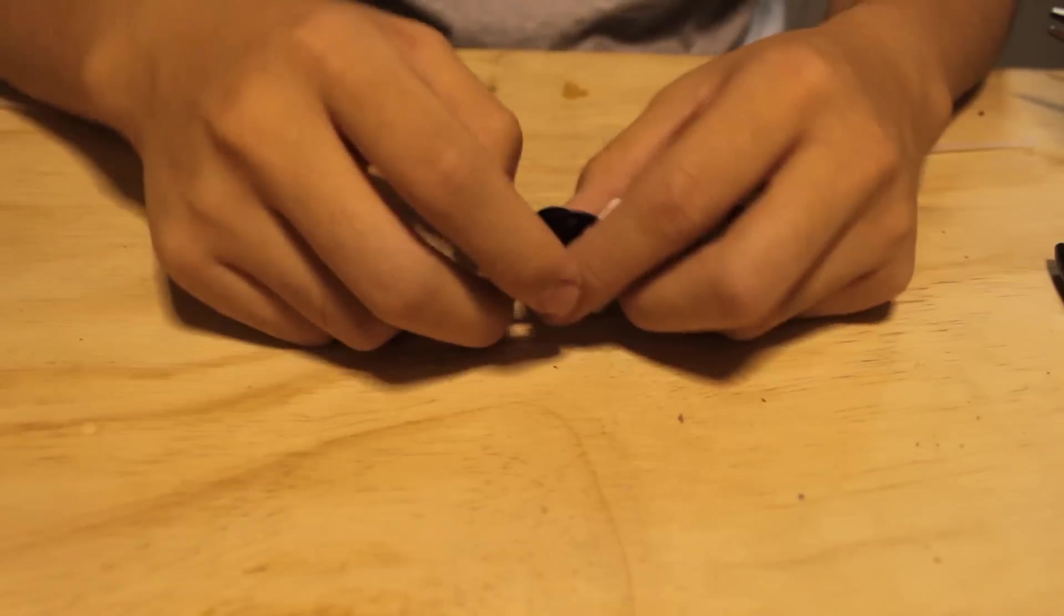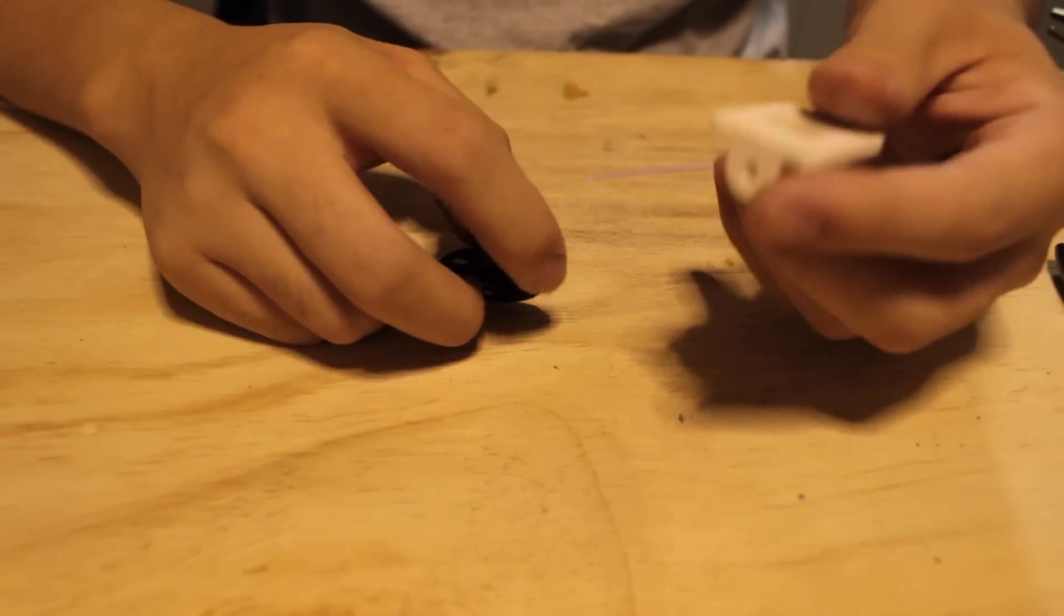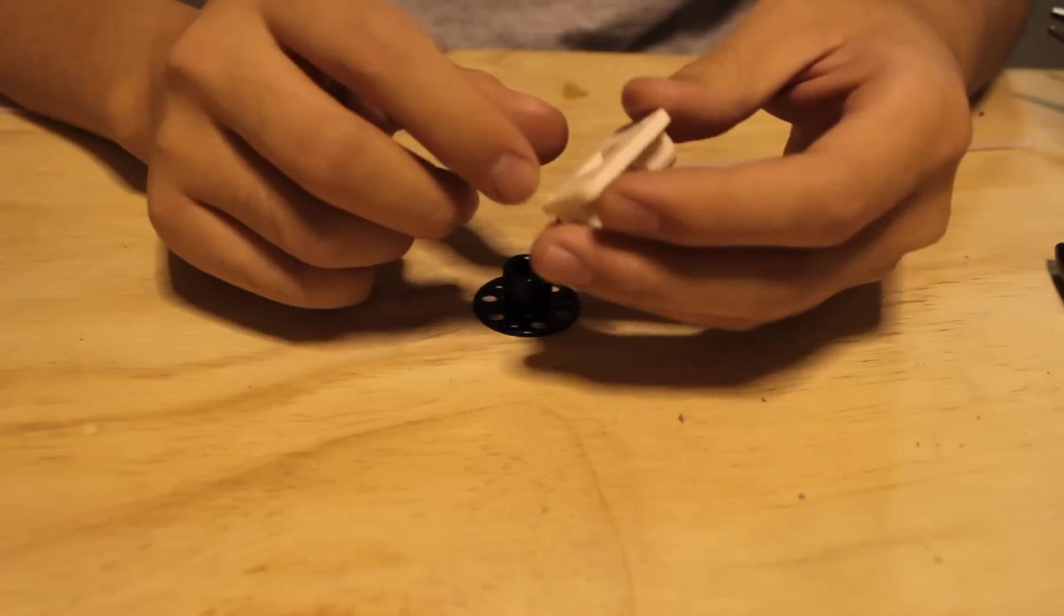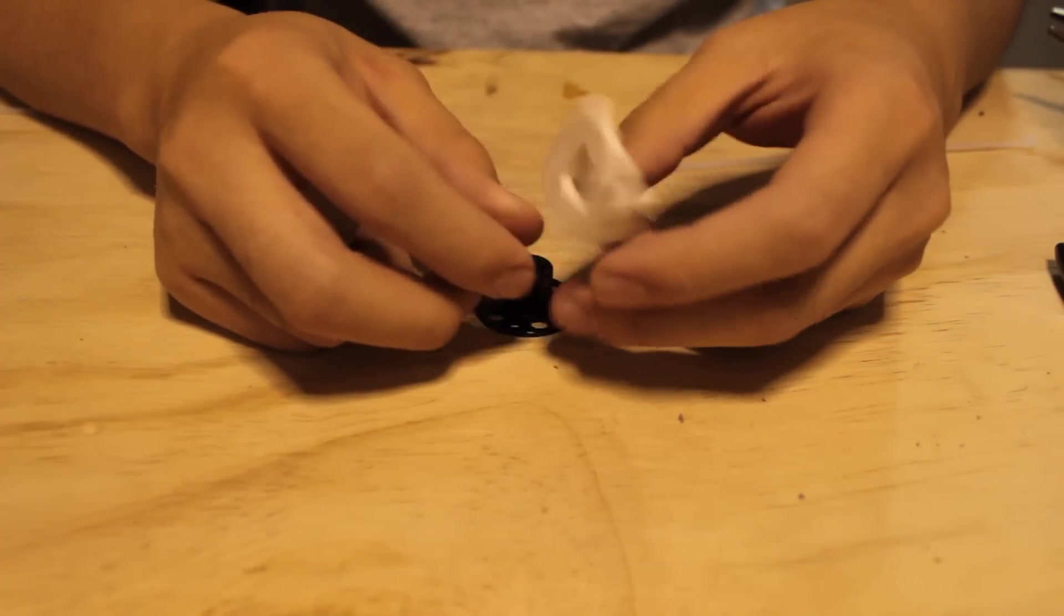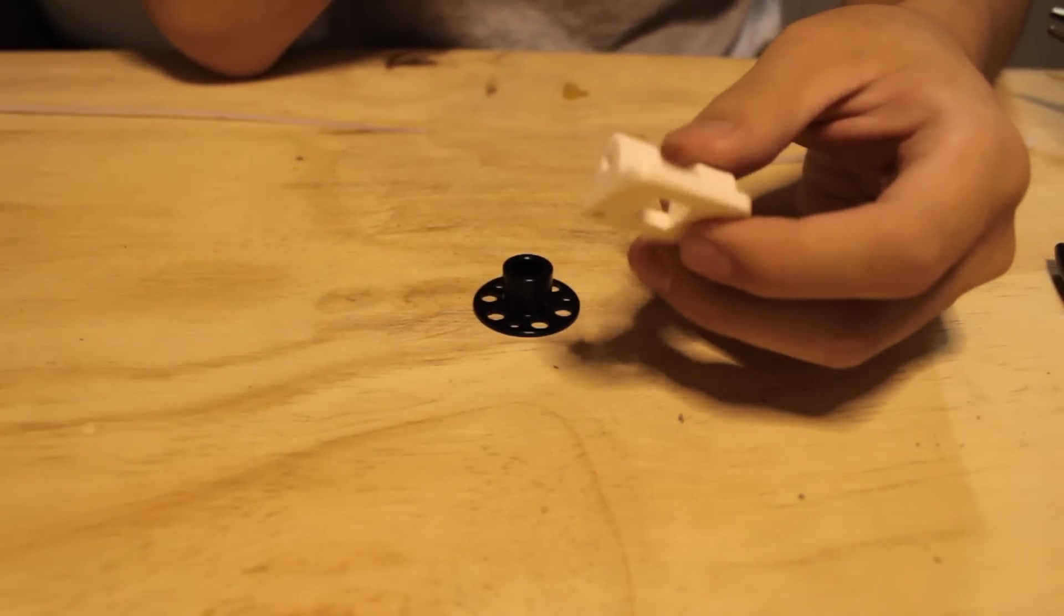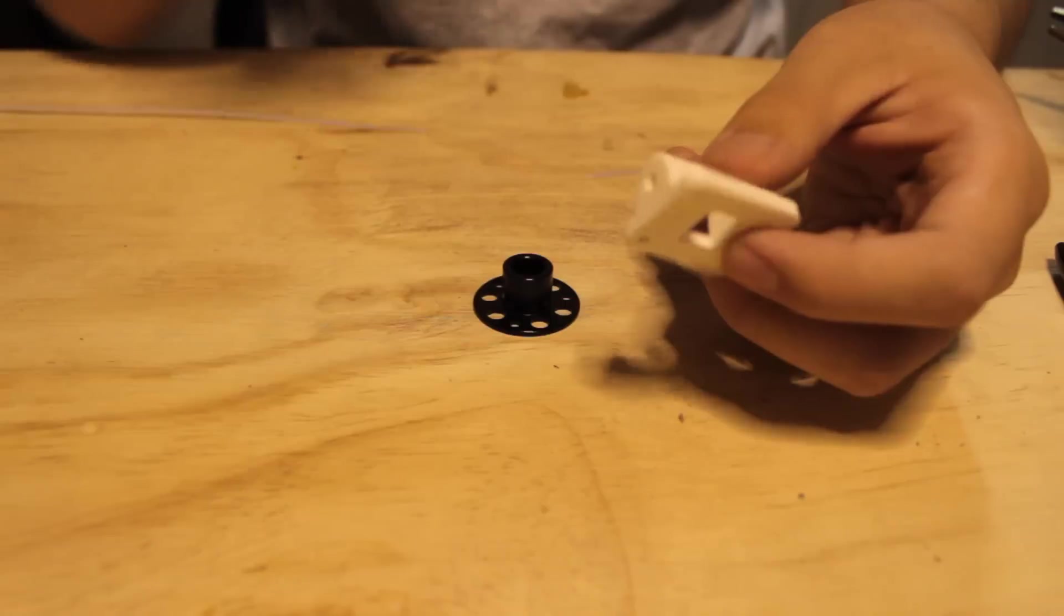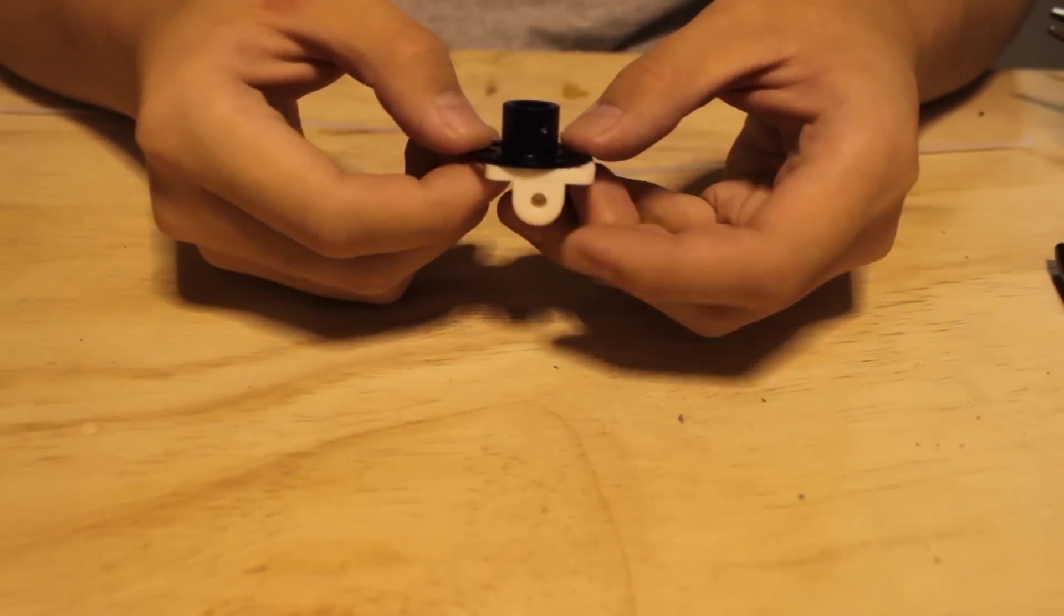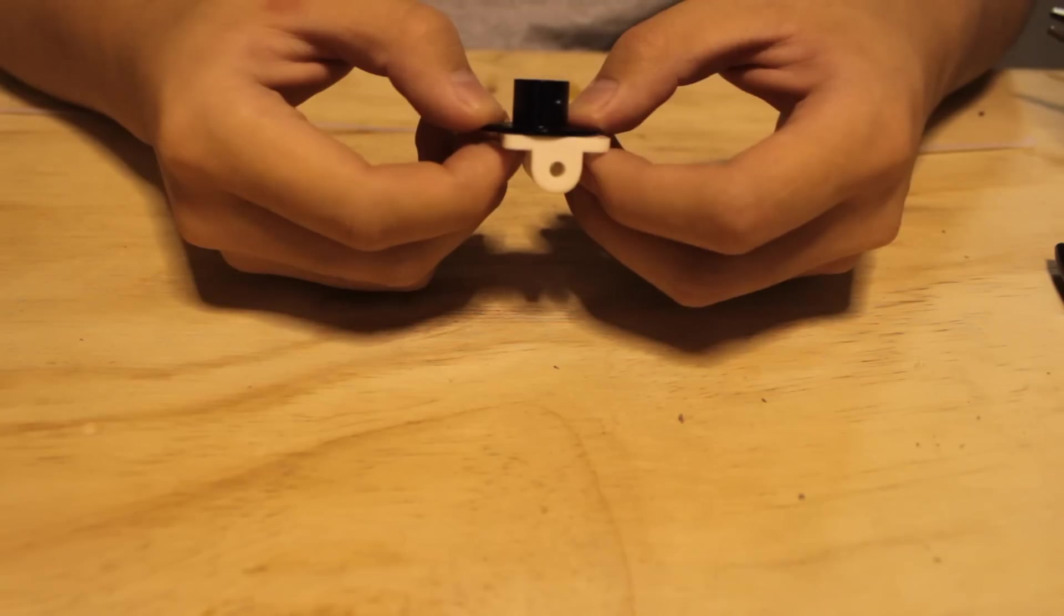Now what we're going to do next is build the yaw mechanism as per RC Explorer's design. So what you're going to need is one of these. These are landing gears and they're down in the description below. I believe you can get these on Hobby King for like $2.50 or something like that.